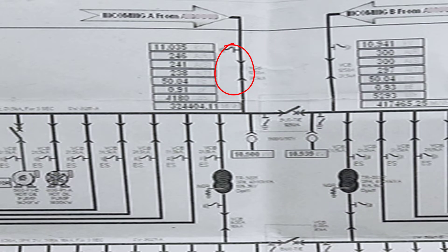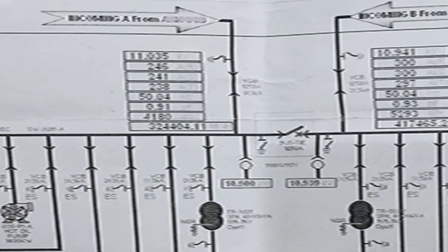Every switchgear has only one circuit breaker to serve a single purpose. Here, this switchgear is responsible for receiving power from the national grid. This is the symbol for the circuit breaker when it is turned on, and this is when it is turned off. The two arrows represent that this circuit breaker is drawable — you can pull it outside the switchgear for maintenance purposes, and this is the symbol when it is drawn out.